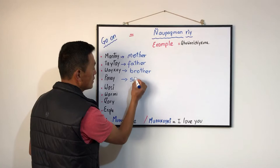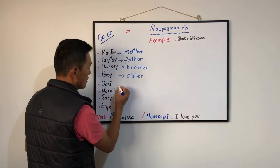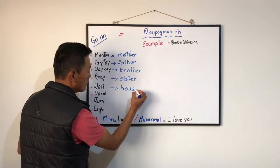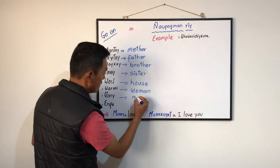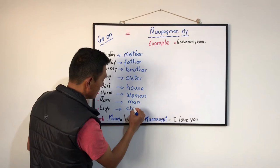Panai — sister. Wasi — home, house. Warmi — woman. Kari — man. Erke — child.